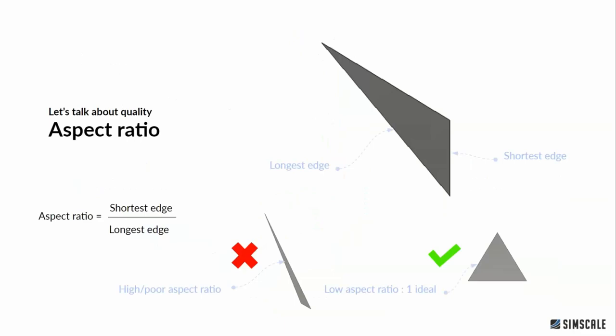Let's talk about the main quality metrics you can check within the SimScale platform. The first is the aspect ratio, dictated by the ratio of the shortest edge to the longest edge of a single element. A really poor ratio means a highly squeezed element, while the ideal scenario is where all edges are the same length.